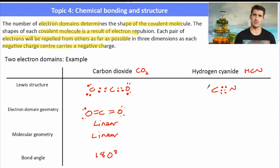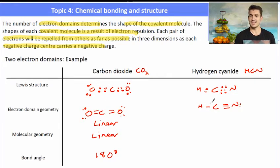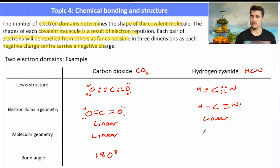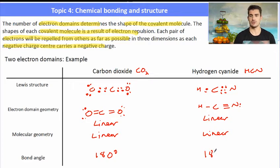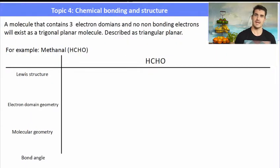Hydrogen cyanide is another molecule we looked at in a previous video, where we have a carbon with a triple bond to a nitrogen and then a single bond to a hydrogen. Again, it has two electron domains and those electron domains are at 180 degrees from each other. So it's described as a linear electron domain geometry and also a linear molecular geometry, with a bond angle between those bonding electrons of 180 degrees.